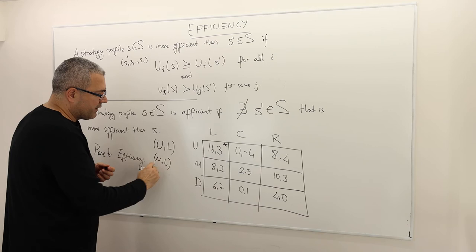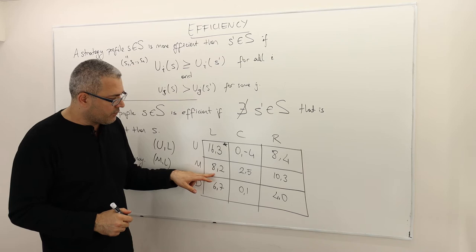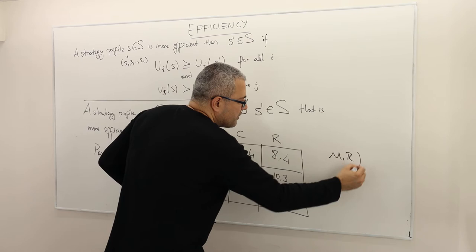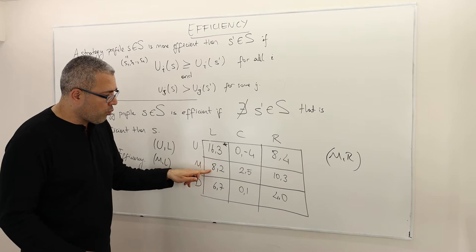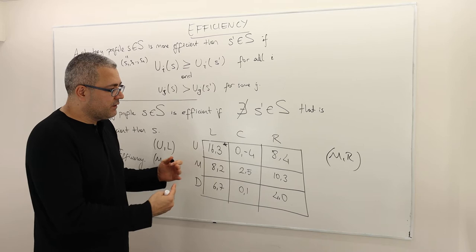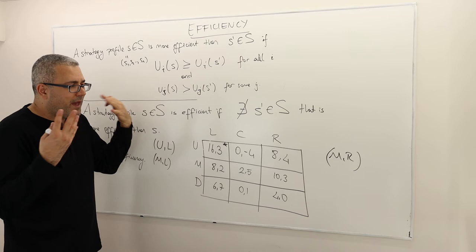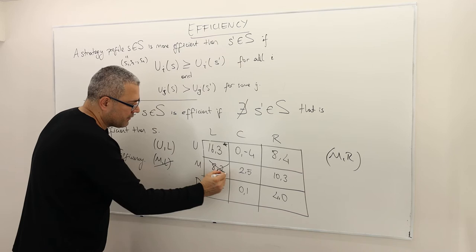What about ML — is ML efficient? Is there any way to make both players better off? It is: when I look at the payoff matrix, I see that MR — with payoff 10-3 — is strictly better for both player one and player two. So instead of playing ML, if these two players play MR, they both will be better off. Hence, there exists an S prime that is more efficient than S. So ML is not efficient.